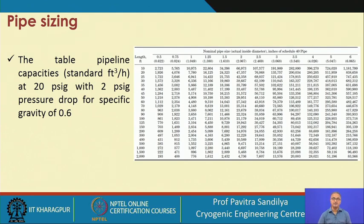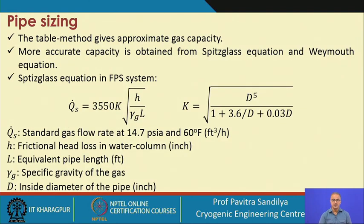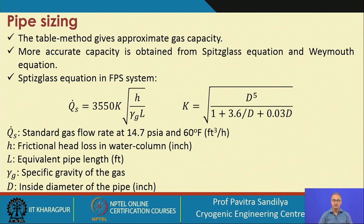The capacity depends on specific gravity — this table is given for a specific gravity value of 0.6. The table gives approximate gas capacity; more accurate capacity is obtained using the Spitzglass or Weymouth equations. The Spitzglass expression for the FPS system can be used to find the actual capacity in the pipeline.